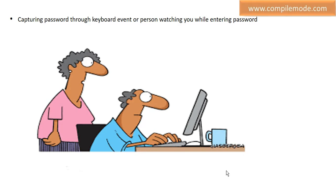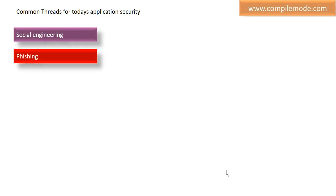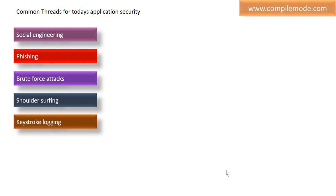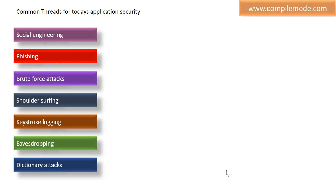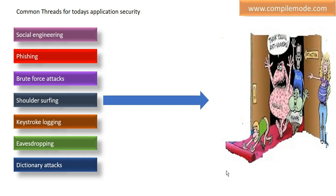These threats can be categorized as social engineering, phishing, brute force attacks, shoulder surfing, keystroke logging, eavesdropping, and dictionary attacks. These are the attacks normally used by attackers or hackers. If your application allows all these threats to pass through, then you are simply allowing any user to enter your application — essentially welcoming them with a red carpet. So these are the security threats in our current traditional authentication techniques.